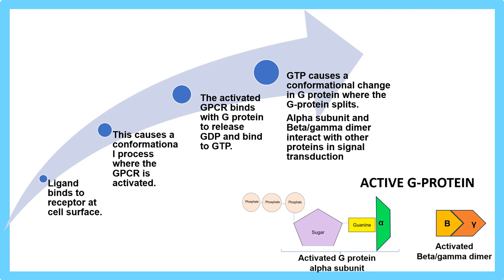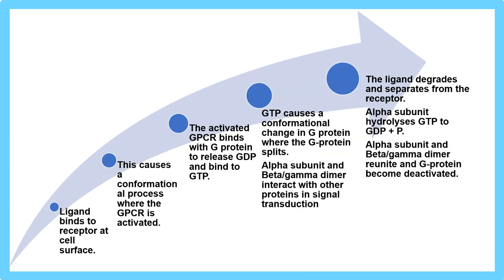GTP then causes a conformational change that splits the G protein: the alpha subunit goes one way and the beta-gamma dimer goes another. When this occurs, it helps interaction with other proteins, leading to a cascade in signal transduction. Subsequently, the ligand degrades and separates from the receptor. The alpha subunit hydrolyzes GTP back to GDP and phosphate. The alpha subunit and beta-gamma reunite to form an inactive G protein.